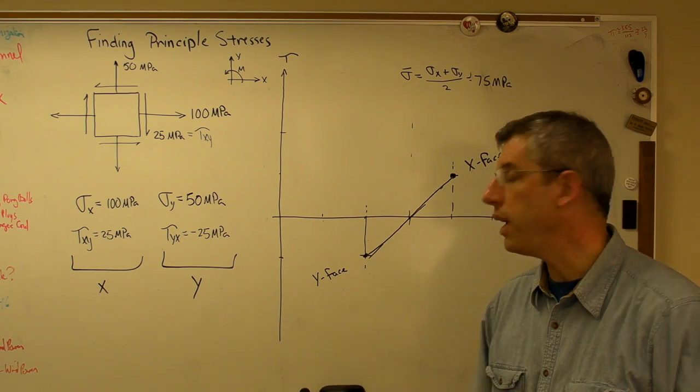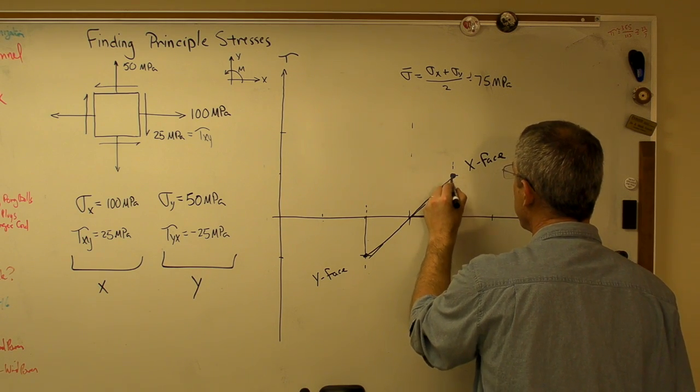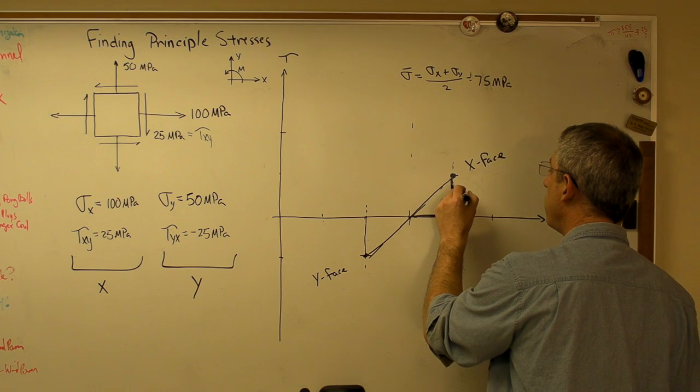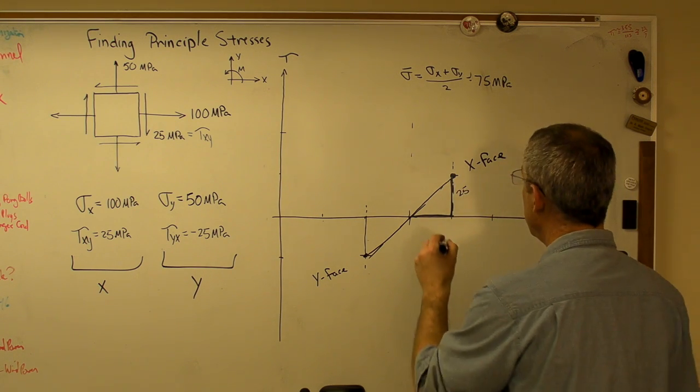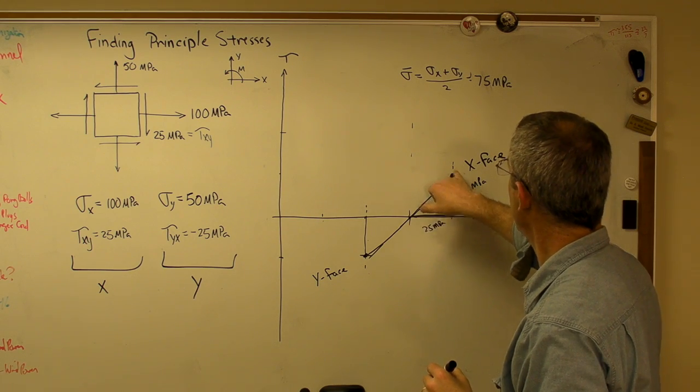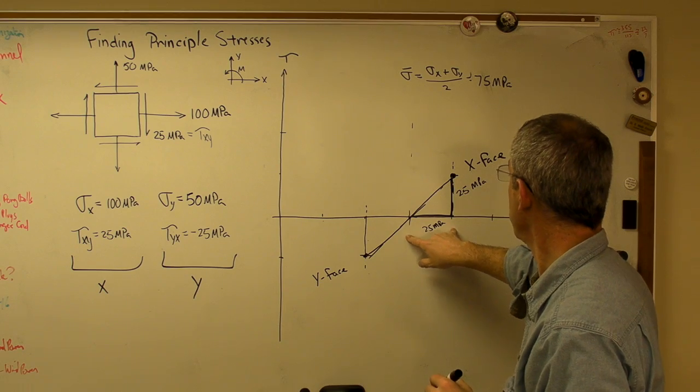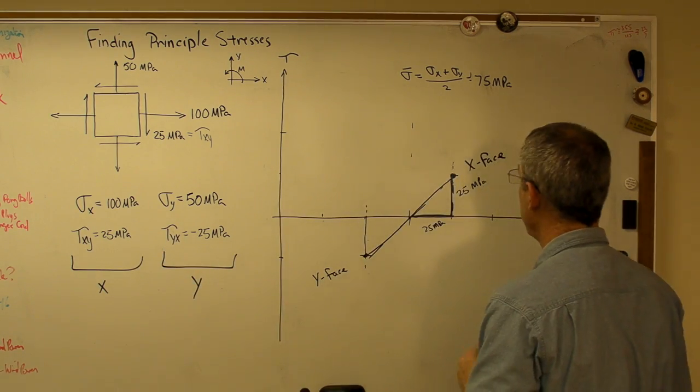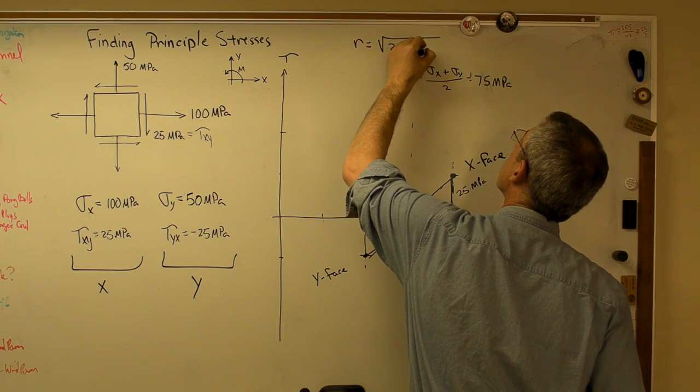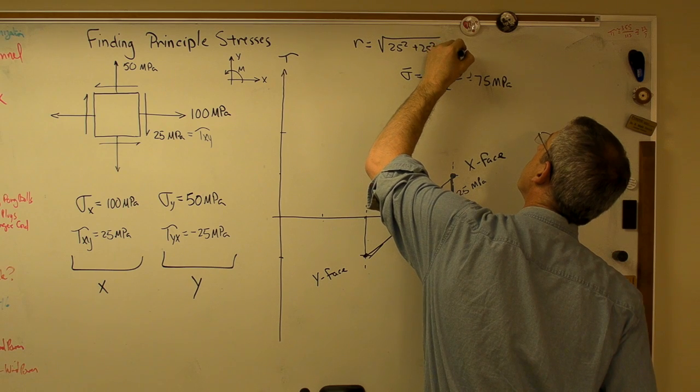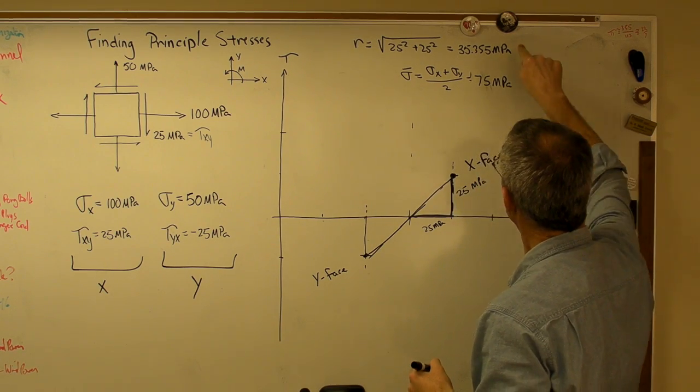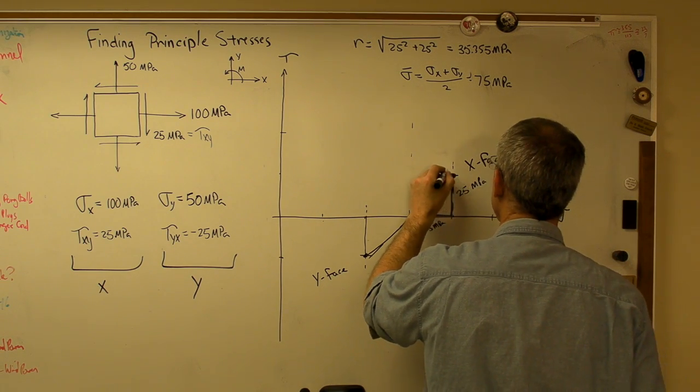Now, last thing I need to know is the radius. Well, this is a right triangle, and the hypotenuse of that right triangle is the radius. I already know that that side of the triangle, that leg is 25 megapascals. And this leg is 25 megapascals. Track your units. Because that's 100, the mean is at 75. That must be 25. And I already knew that tau xy is 25. So I know that the radius is 25 squared plus 25 squared, and that's going to equal 35.355 megapascals. So I know the center and I know the radius. I know everything there is to know about a circle.